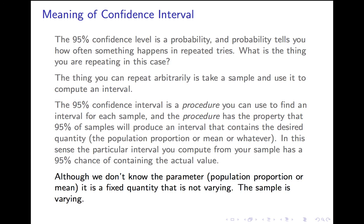An important pitfall to avoid with a numerical variable: you might think the 95% confidence interval means 95% of the values of x fall within it — for example, that 95% of teenage girls gain weight in that interval. That is not true. That isn't what it tells you.